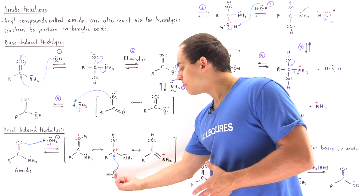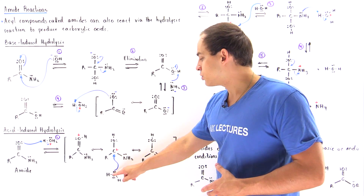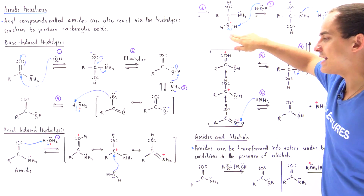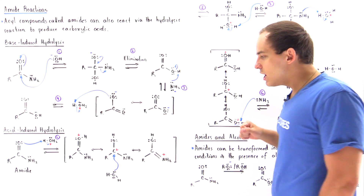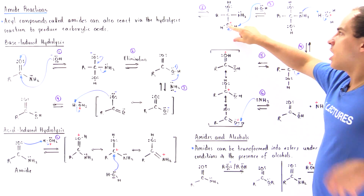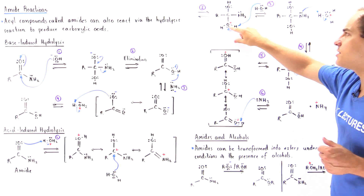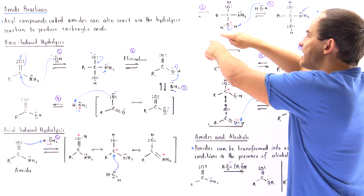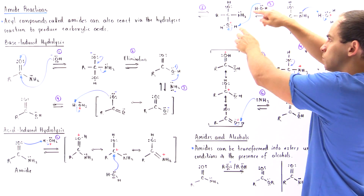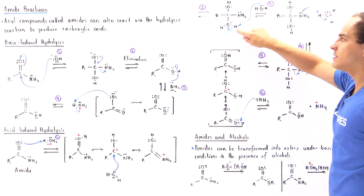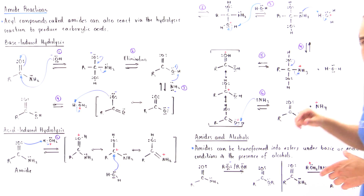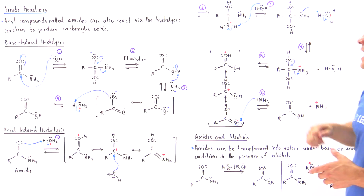The water molecule forms a bond between its oxygen and the carbon, giving us our tetrahedral intermediate in step two. In step three, the destabilizing positive charge on the oxygen increases the energy of this intermediate, so a nearby water molecule deprotonates the H off our oxygen, forming a more stable, lower-energy intermediate with no positive charge on oxygen.